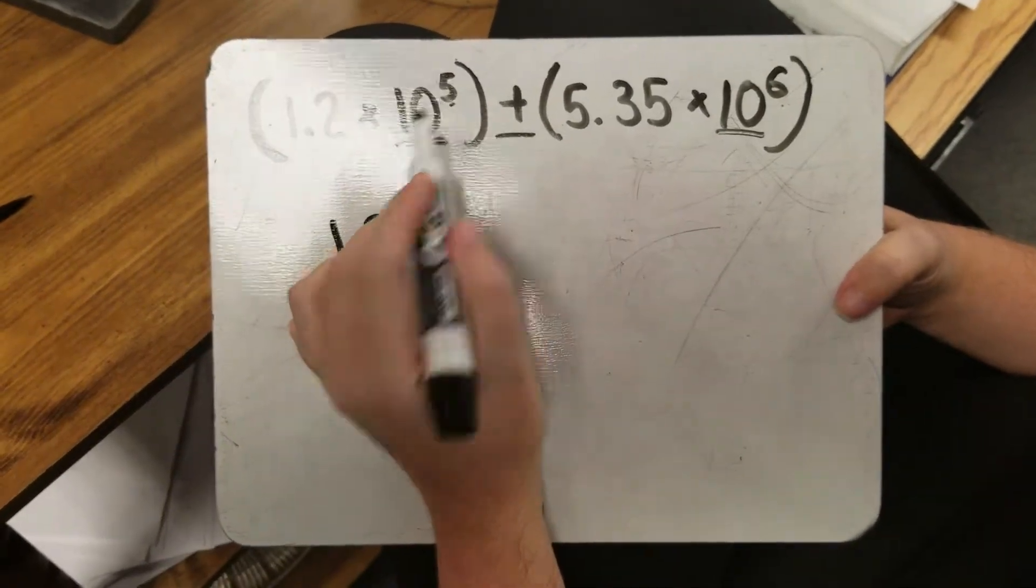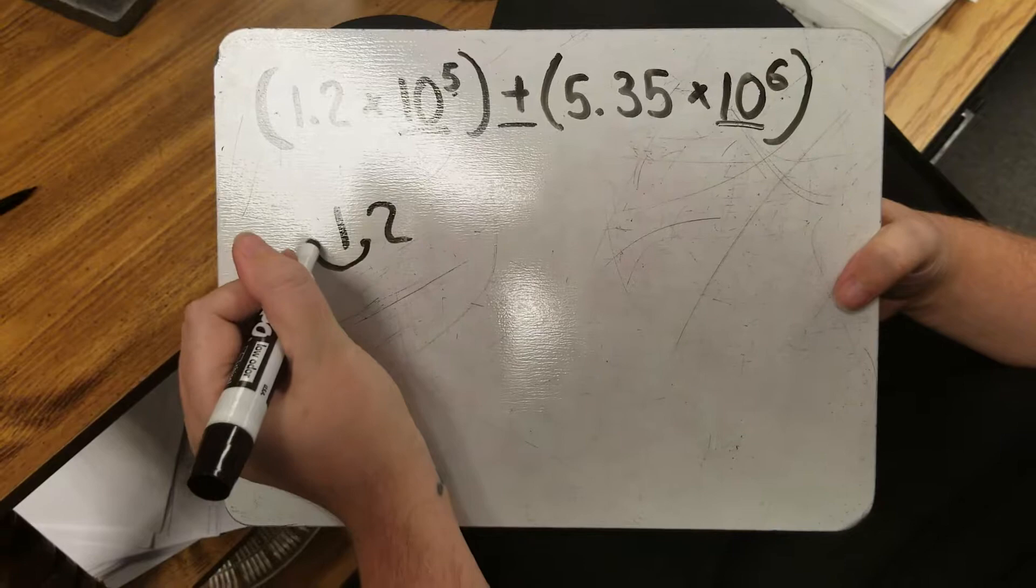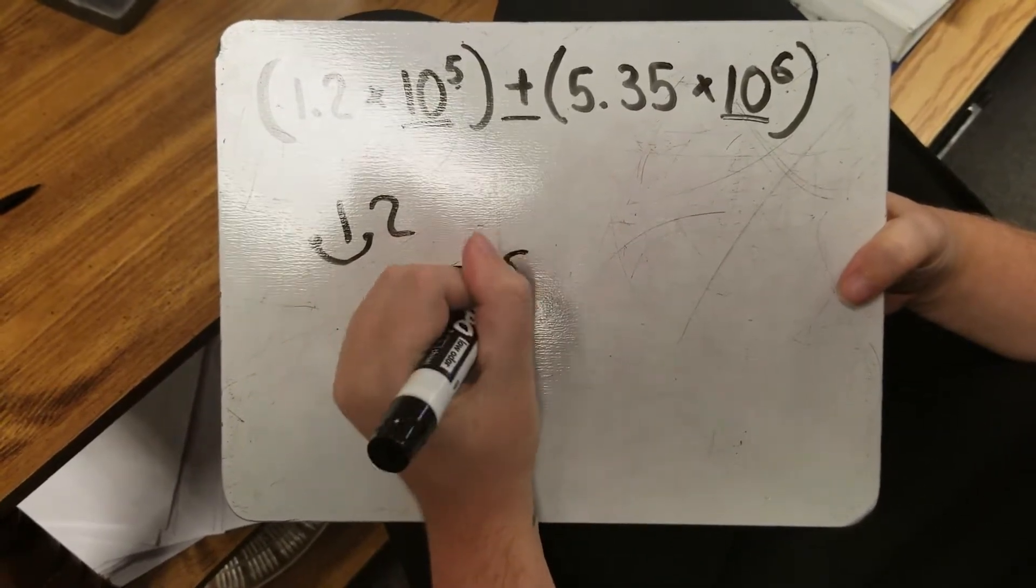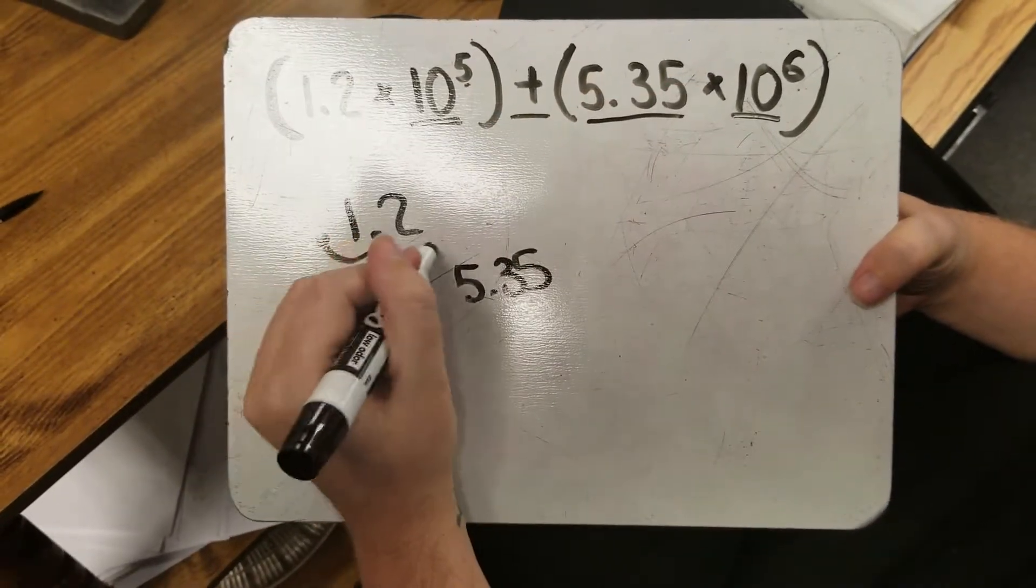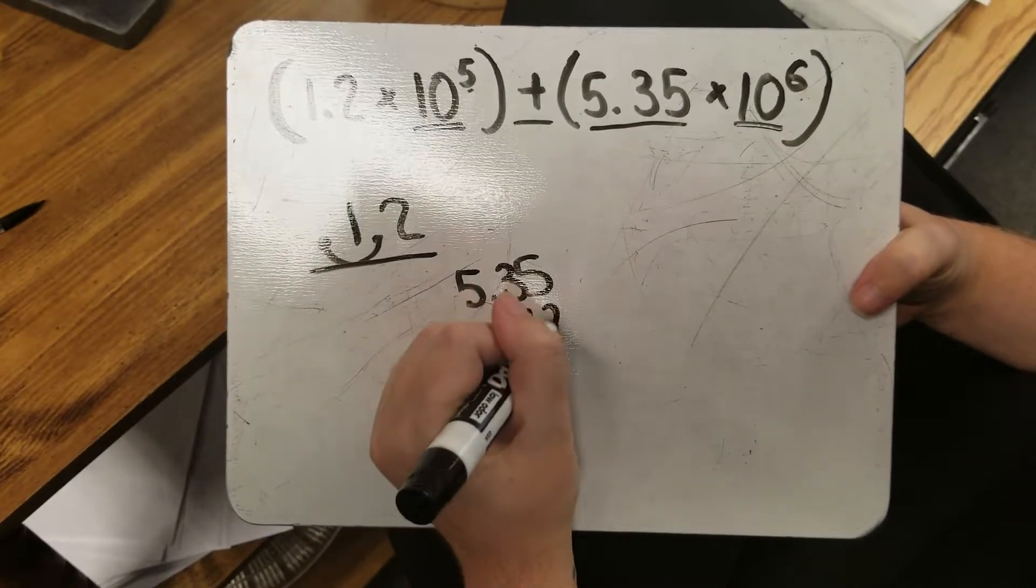If I want to increase my exponent, I move 1 to the left. So I now have 5.35 that I've taken from right here, and I'm now adding it to my new number. I have to line up my decimals.